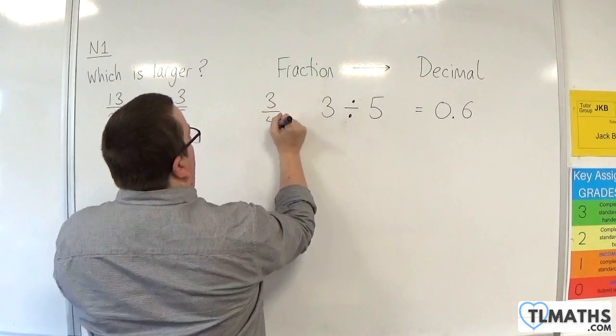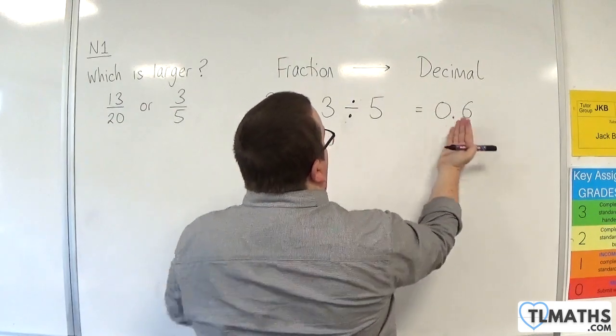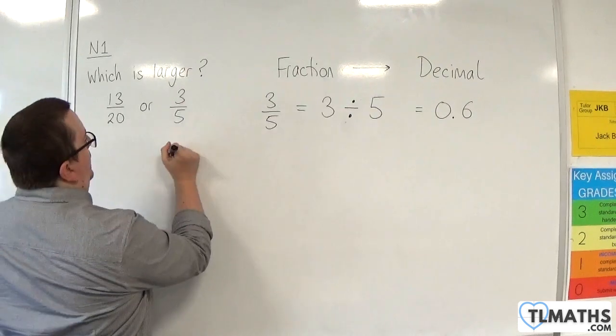Three divided by five, you should get 0.6. So, three-fifths is the fraction. This is the process, three divided by five, and that's equal to 0.6. So, that's 0.6.